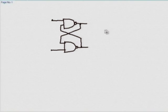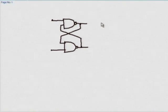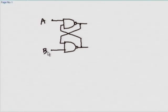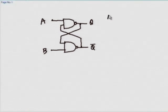What is R, what is S, what is Q, what is Q bar? One approach is to just state the terminal names, but that is not very satisfying. So what I am going to do is call these some arbitrary names A and B, call this Q and this Q bar. Now let us see what happens if I apply certain combinations of A and B.